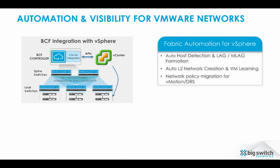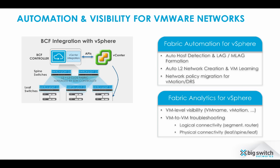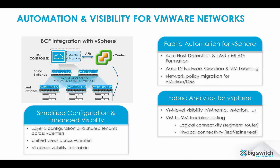Let's review the major advantages of Big Cloud Fabric integration with VMware vSphere. Fabric automation greatly simplifies physical network provisioning for virtual workloads. Fabric analytics gives VM and network admins new troubleshooting tools to easily pinpoint virtual workload connectivity issues. Finally, Big Cloud Fabric plugin for vCenter further simplifies physical network provisioning and provides additional visibility for vSphere admins.